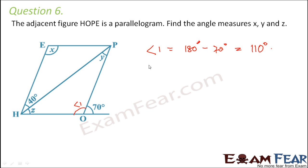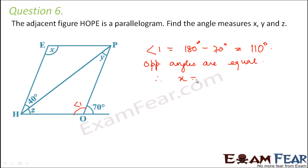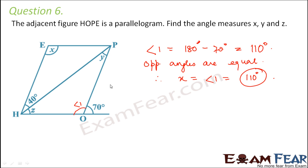Now as per the property of parallelogram, we know that opposite angles in a parallelogram are equal. Therefore, x will be equal to angle 1, which is equal to 110 degrees. Therefore, the value of x is 110 degrees.